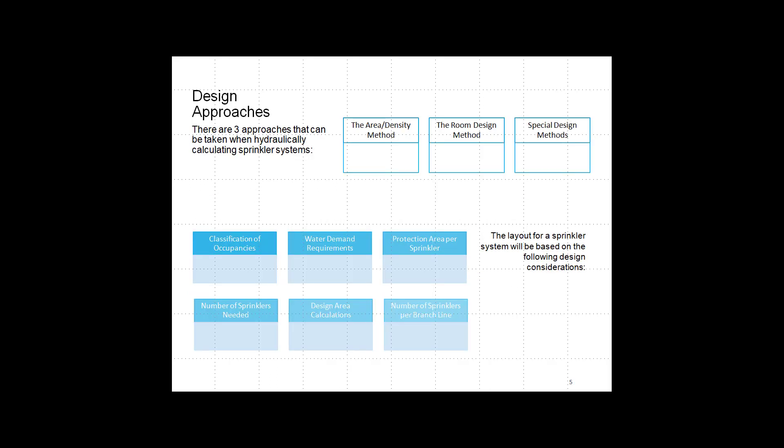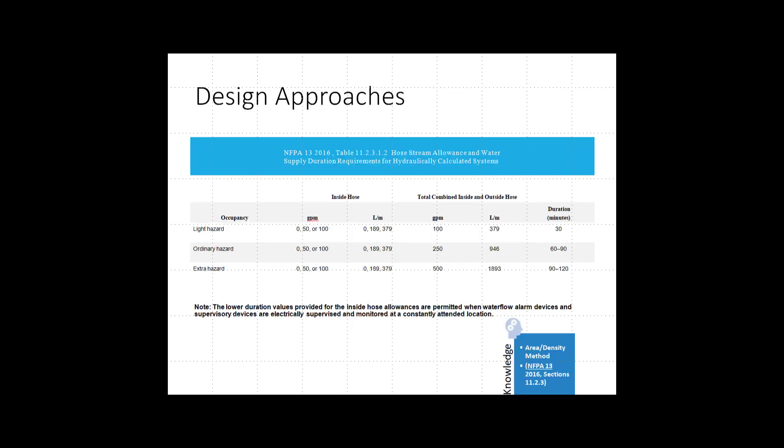The layout for a sprinkler system will be based on the following design considerations: Classification of Occupancies, Water Demand Requirements, Protection Area Per Sprinkler, Number of Sprinklers Needed, Design Area Calculations, and the number of sprinklers per branch line.